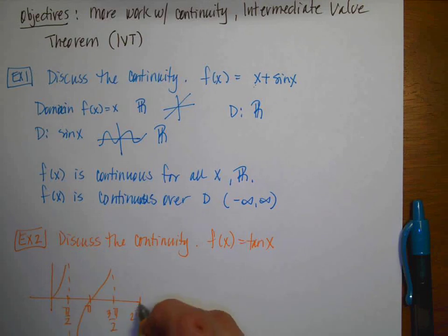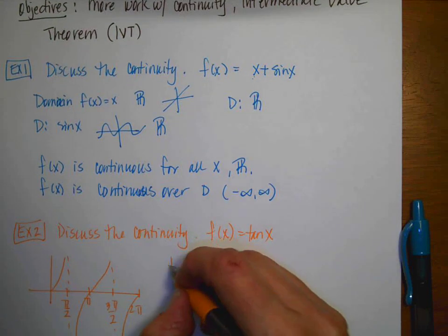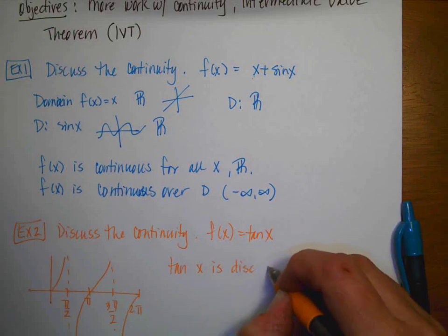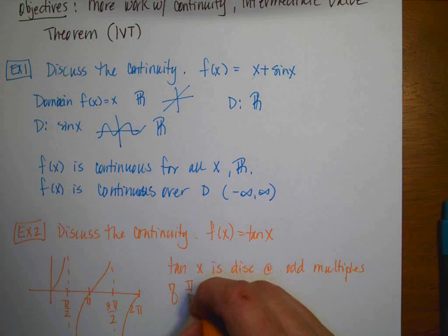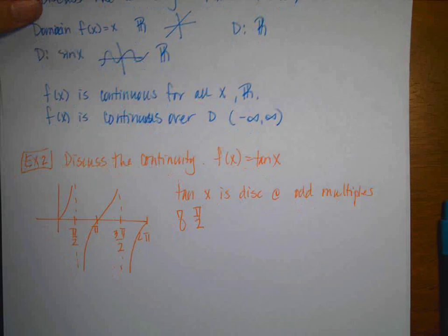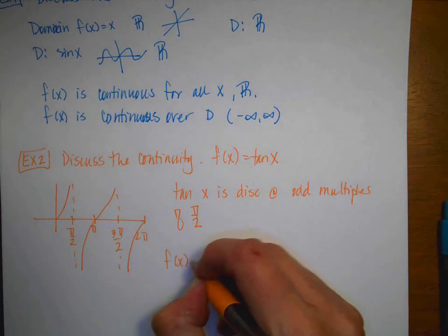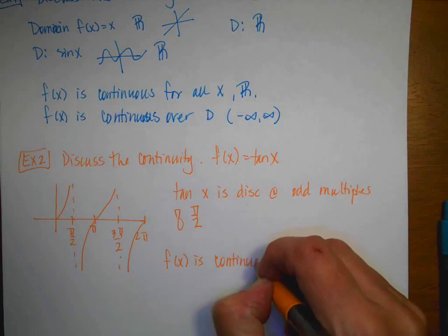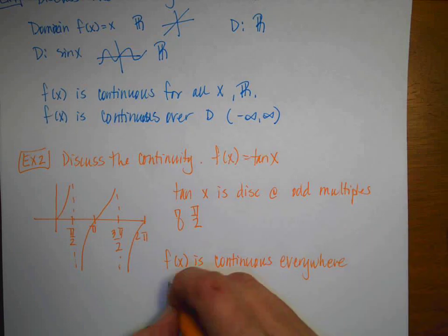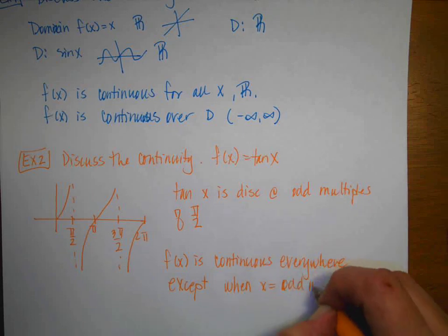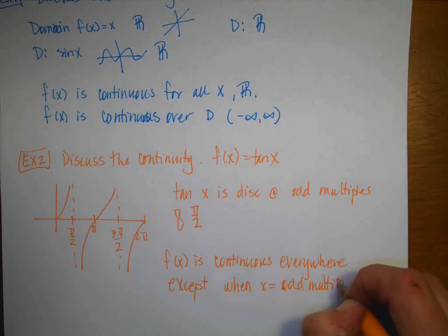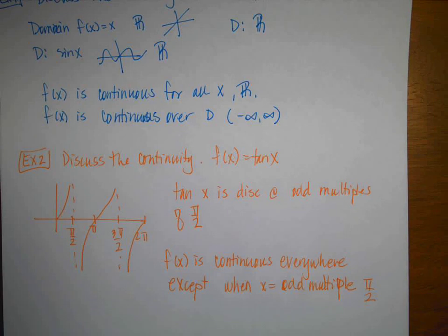So my graph would look like this, and that would be two periods. So the function, tan(x), is discontinuous at the odd multiples of π/2. But remember, I have to answer the specific question that's asked, and they ask me to discuss continuity. So I would say f(x) is continuous everywhere, except, keyword, when x is an odd multiple of π/2. So it's very important that you always answer the question that's asked.